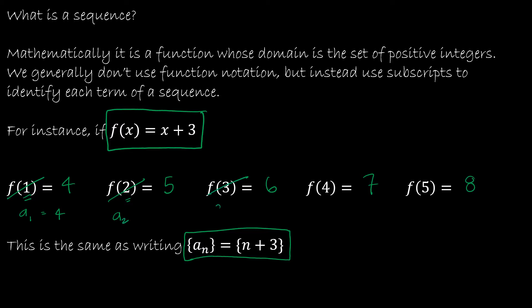And this would be considered a sub 3, and a sub 4, and a sub 5. So again, it's just a counting mechanism using those subscripts to determine each value of the sequence.